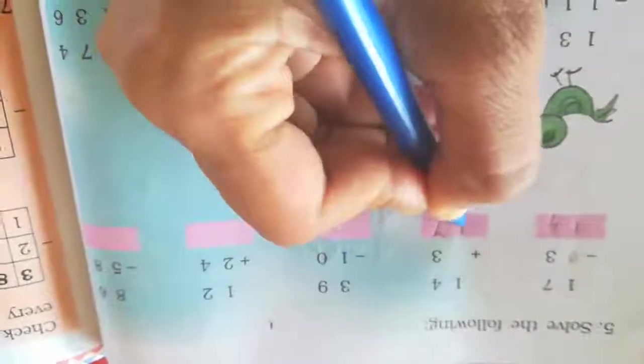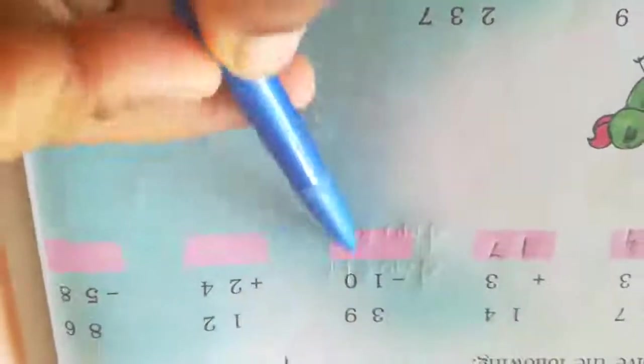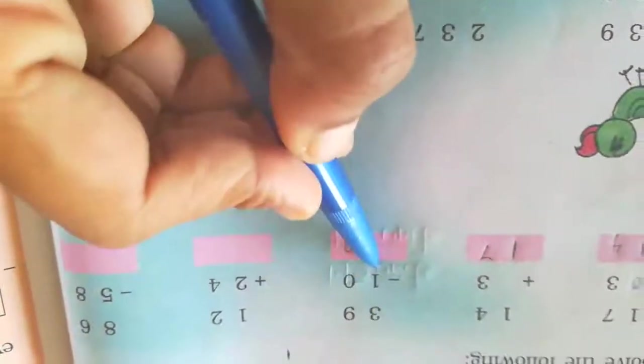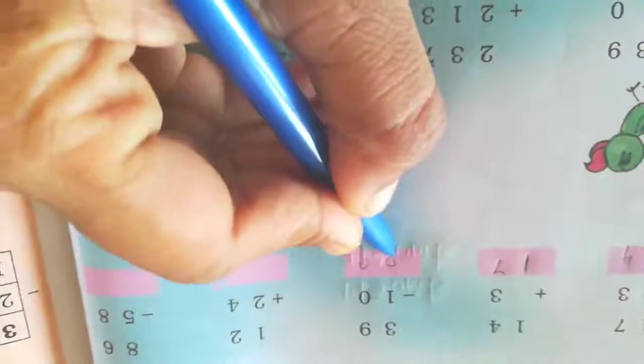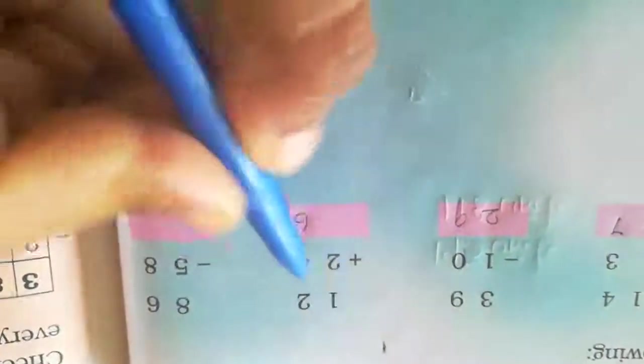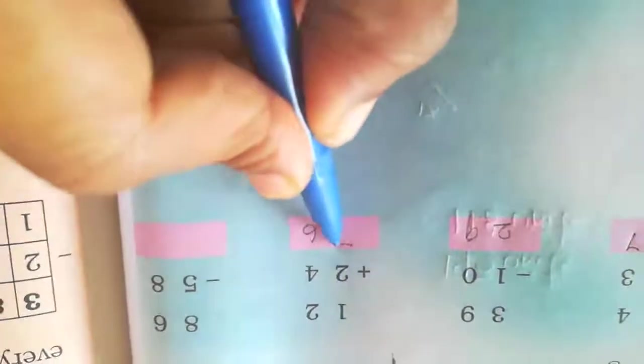Next: 3 minus 1. And then 9 minus 0 is 9. 3 minus 1 is 2. Simple addition only: 2 plus 4 — keep 2 in your mind, 4 on your fingers — 6. Next, 1 plus 2 is 3.